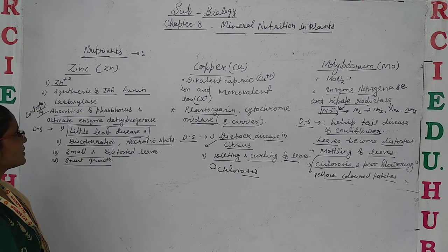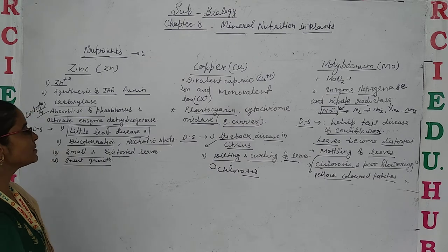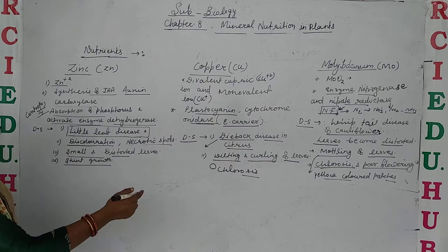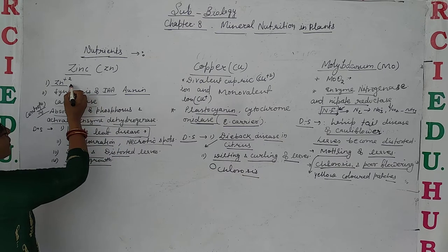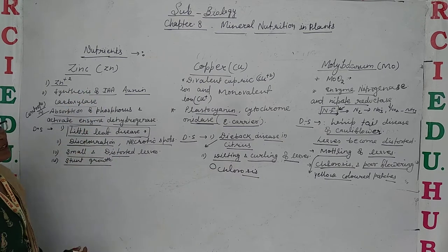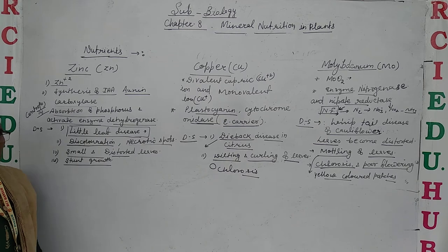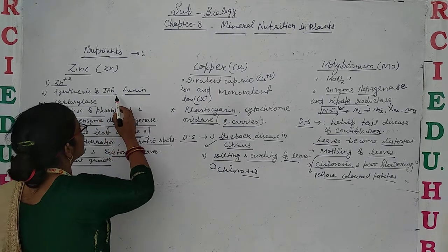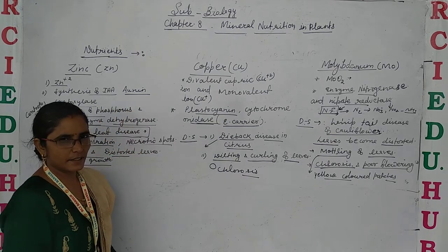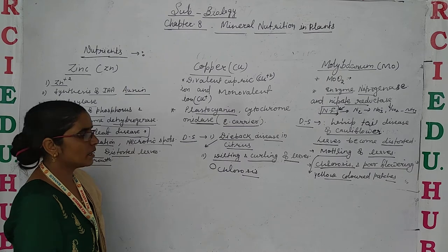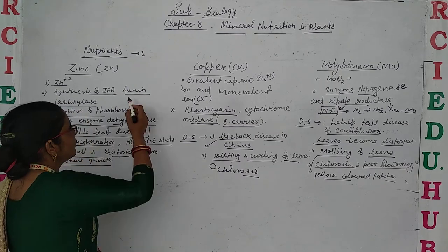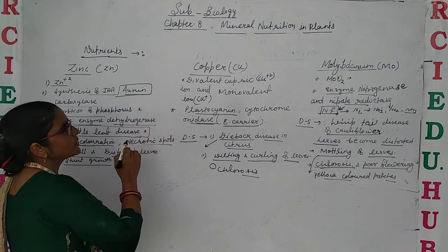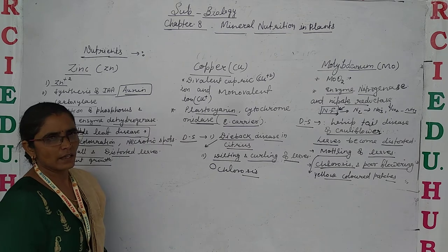Let's discuss about the next mineral nutrition, that is Zinc. Zinc is absorbed by the plants in the form of Zinc ions. It plays a vital role in the synthesis of Indole Acetic Acid in plants, which is a type of Auxin plant hormone.